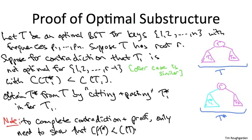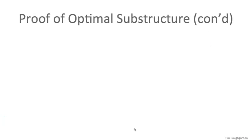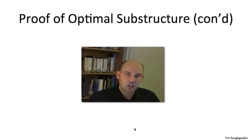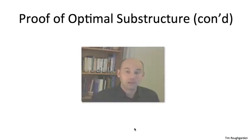So to complete the contradiction and therefore the proof of the optimal substructure lemma, all we have to show is that the weighted search cost of T star is strictly less than that of T. That would contradict the purported optimality of T. So that's precisely what I'll show you on this next slide, and it's going to be evident if we do a suitable calculation.